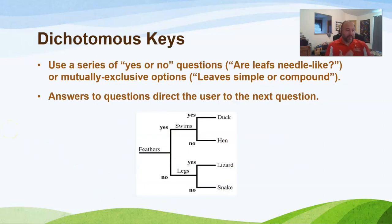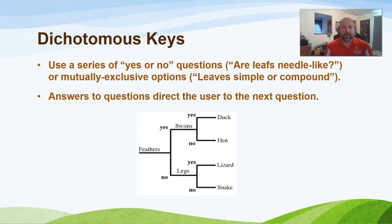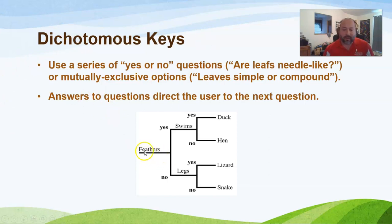To identify trees in the field, you can use a dichotomous key. When someone asks what kind of tree something is and you don't know, a dichotomous key provides a series of yes-or-no questions that take you from not knowing the tree all the way down to identifying the species. You answer one question to get to the next.